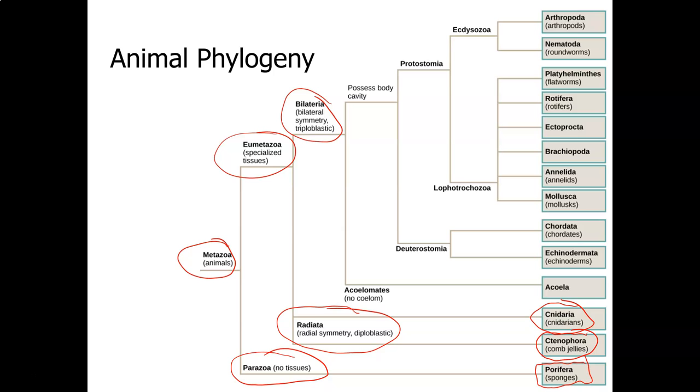Going back to the bilateria, those with bilateral symmetry means that they can be divided into two equal halves. It means they have a left and a right. That ancestor evolved into an ancestor with a body cavity called a coelom, and then an ancestor with no coelom called an acoelmate. And the acoelmates evolved into the phylum today we call the acila.